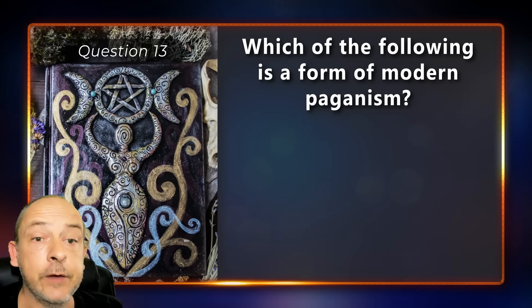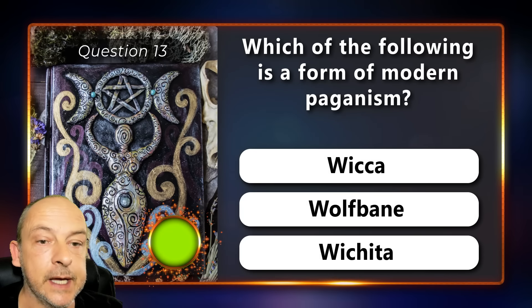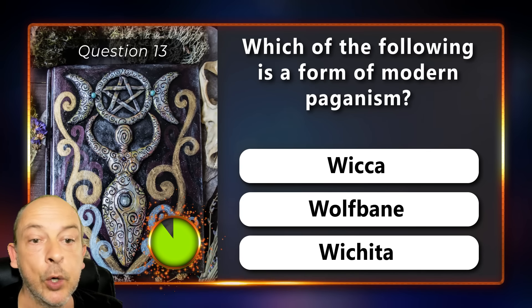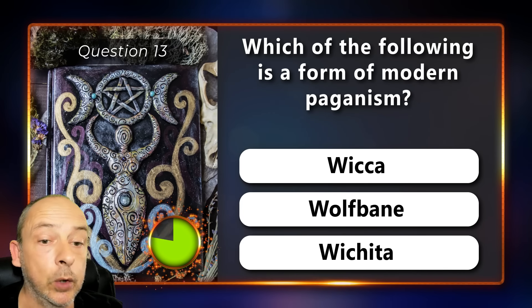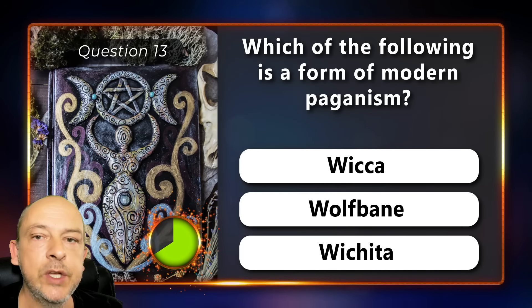Which of the following is a form of modern day paganism: Wicca, wolfsbane, or Wichita? The answer is Wicca.